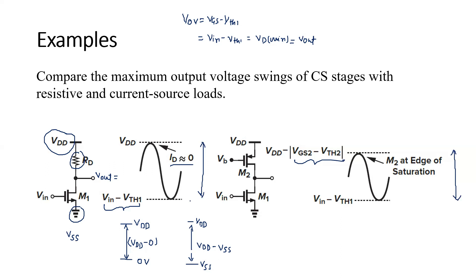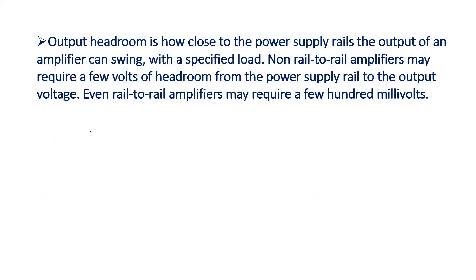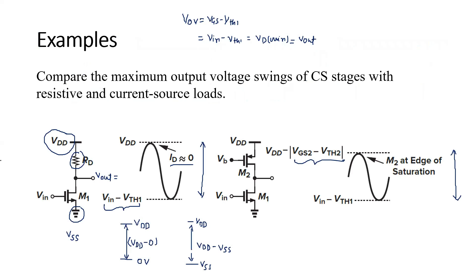Now the third term: headroom voltage. Headroom voltage is defined as how close your output can swing to the supply voltage. The output headroom is how close to the power supply rails the output can swing. The output is swinging — increasing from a minimum value and reaching VDD for the first figure, and reaching VDD minus the overdrive voltage of the second transistor for the second figure. So VDD minus the overdrive voltage of M2 is the maximum limit of the output for figure two.